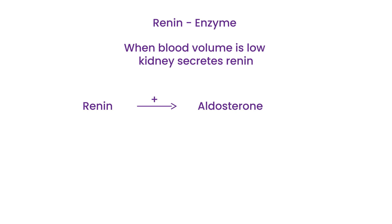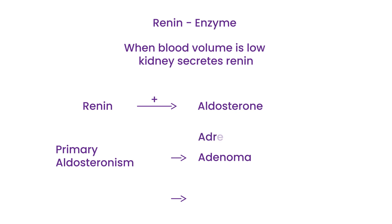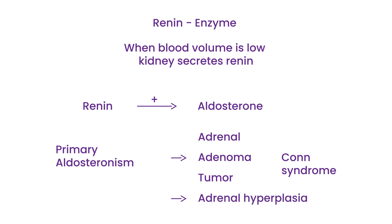When we talk about primary hyperaldosteronism, it can be due to a couple of reasons. The first is if there is a tumor in the adrenal gland — an adrenal adenoma. This is given a special name after the physician who discovered it: Conn's syndrome. The second reason is adrenal hyperplasia. The distinction matters because the treatment differs: tumors are treated surgically, while hyperplasia is treated with medication.